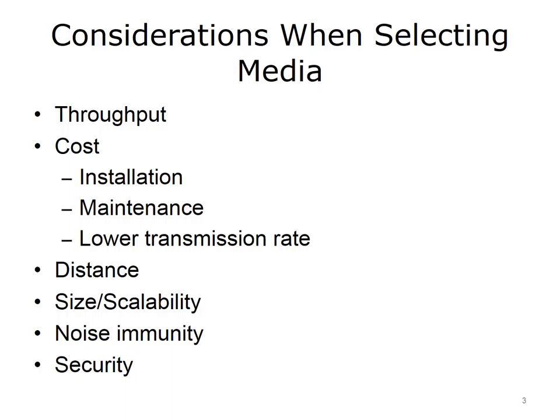You have to consider size and scalability. Different media have different maximum segment and network lengths, and support for different numbers of nodes. You have to think about both current and future needs — how many nodes do you need to connect, how far apart are they, and would the media support additional nodes? You have to worry about noise: copper cables are affected by EMI, and wireless by RFI, while fiber is not affected by either. Conduit can help protect copper cables from EMI. Security is also an issue; wireless is more susceptible to eavesdropping than copper or fiber optic, though steps can be taken to make wireless networks as secure as wired networks.